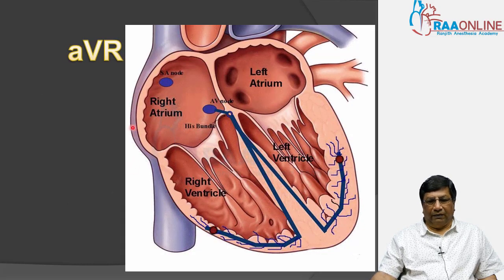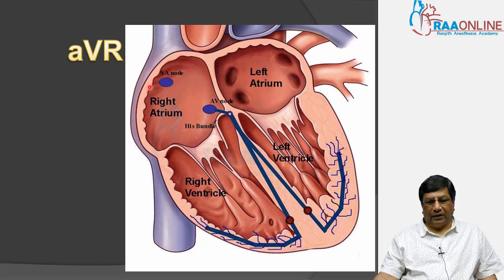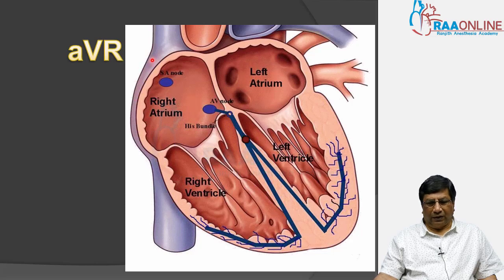Lead AVR is positioned at the right and superior region of the heart, overlooking the right ventricular outflow tract and the sinus node. It gives you information about the right superior surface of the heart.